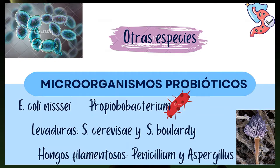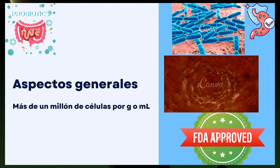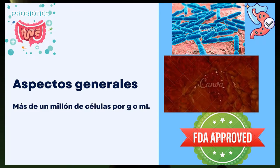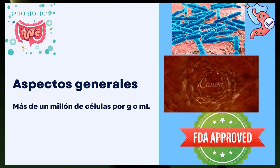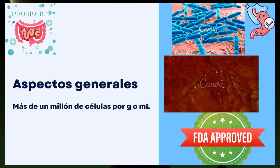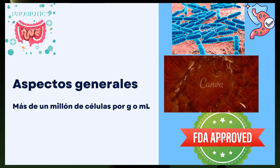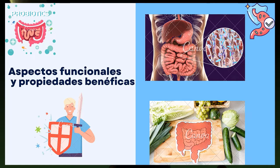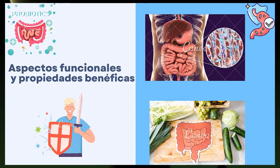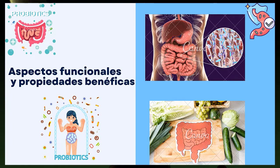Para asegurarse de que los probióticos proporcionen los beneficios esperados, deben tener más de un millón de células viables por gramo o mililitro de producto. Además, deben considerarse aspectos como el origen, la identidad, la seguridad y la resistencia —sobrevivir al paso por el estómago, el intestino delgado, el estrés ambiental y no presentar mutaciones—, aspectos técnicos como desarrollarse in vitro y durante el procesamiento, sobrevivir y mantenerse viables durante el transporte y almacenamiento, y aspectos funcionales con evidencia experimental que muestre los beneficios a la salud. Se han realizado investigaciones para modificar la estructura y actividades metabólicas de la microbiota intestinal mediante el suministro de probióticos y prebióticos, es decir, de simbióticos.